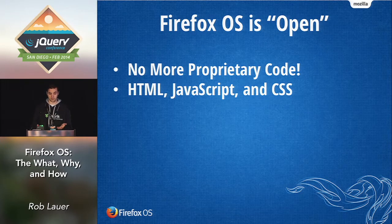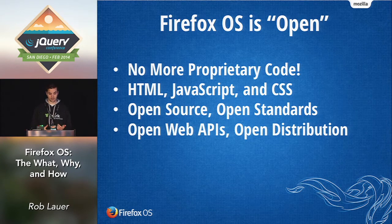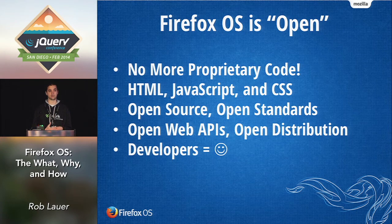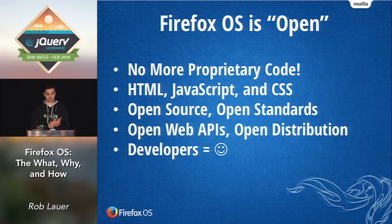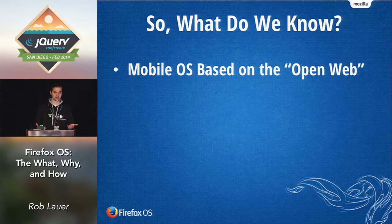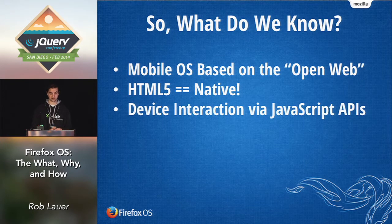You also use JavaScript to interact with native device features. It's open source, built on open standards. The way you interact with device features is through open web APIs, and unlike other vendors, the app distribution process is entirely flexible. Firefox OS runs on relatively low-powered devices — meaning cheap and easily accessible, but still very performant. Key takeaways: it's a mobile OS based on the open web, HTML5 apps are native and the only way to develop for the platform, and you interact with native device features through JavaScript.